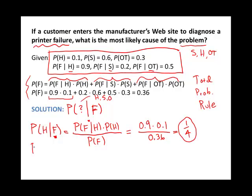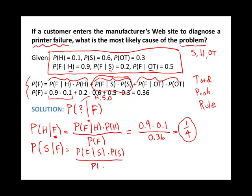Now we're going to look at the probability of a software problem given failure, P(S|F). This is the component: P(F|S) × P(S) divided by P(F). So this is 0.2 × 0.6 divided by 0.36, which is one third.